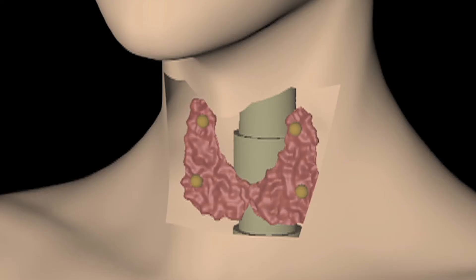If you have the surgery done by people who do it quite often, the risks are low. The main risks are that it could affect the nerve to the voice, so you could end up with a hoarse voice. And it may affect the calcium glands — the parathyroid glands behind the thyroid — in which case you'd need calcium tablets.